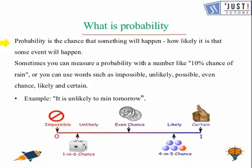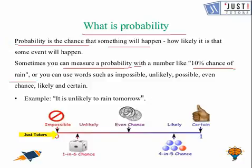And here probability is the chance that something will happen. So sometime we can measure probability like 10% chance of rain. And these are some terms like whenever the probability of something is impossible, then it's 0. For certain, it's always 1. And these are some terms in between it.